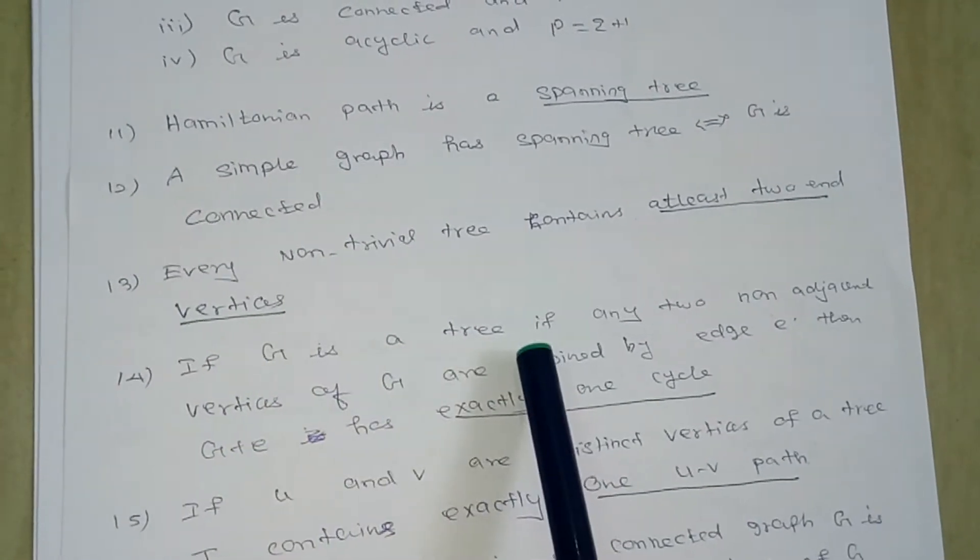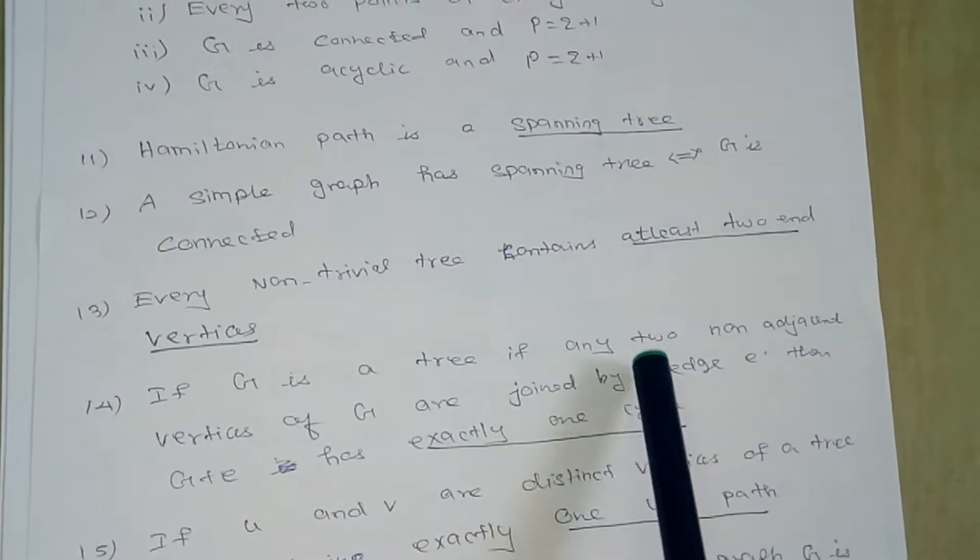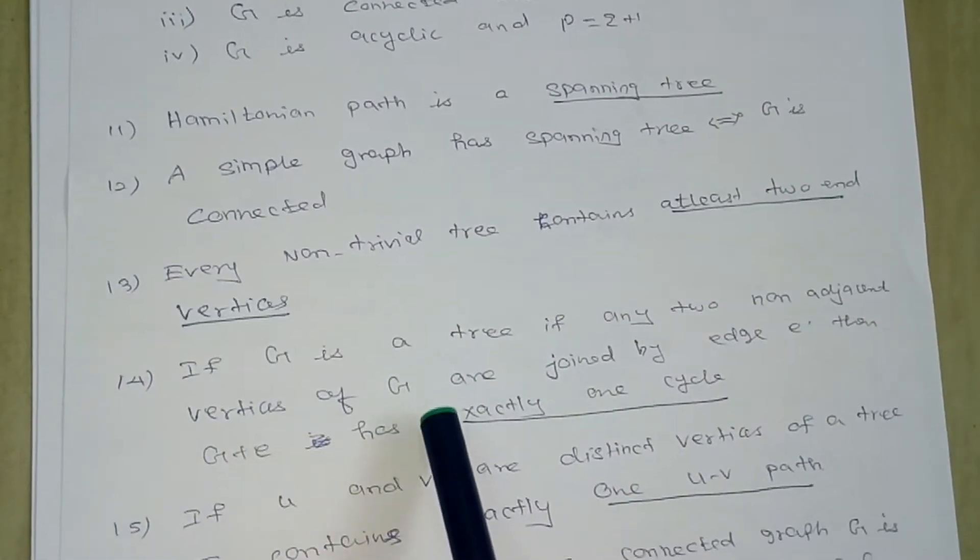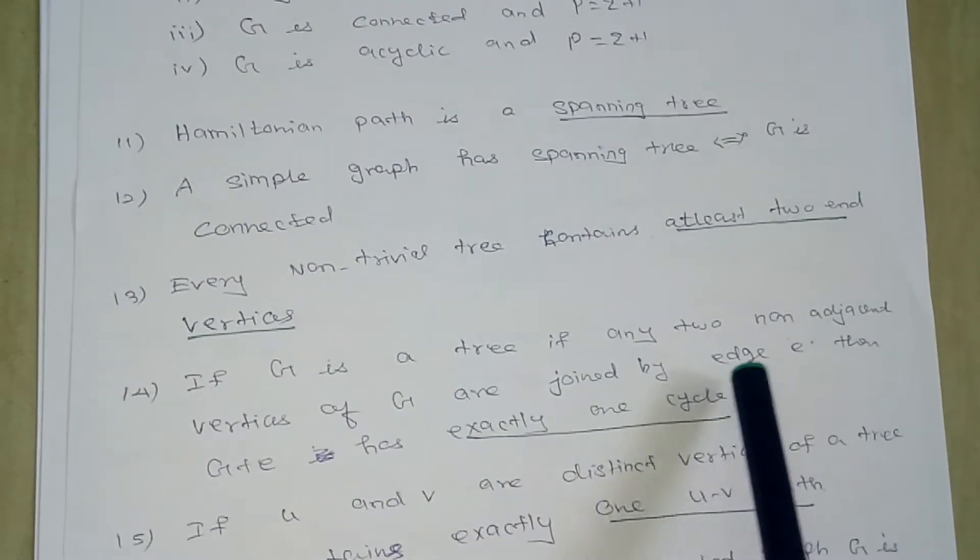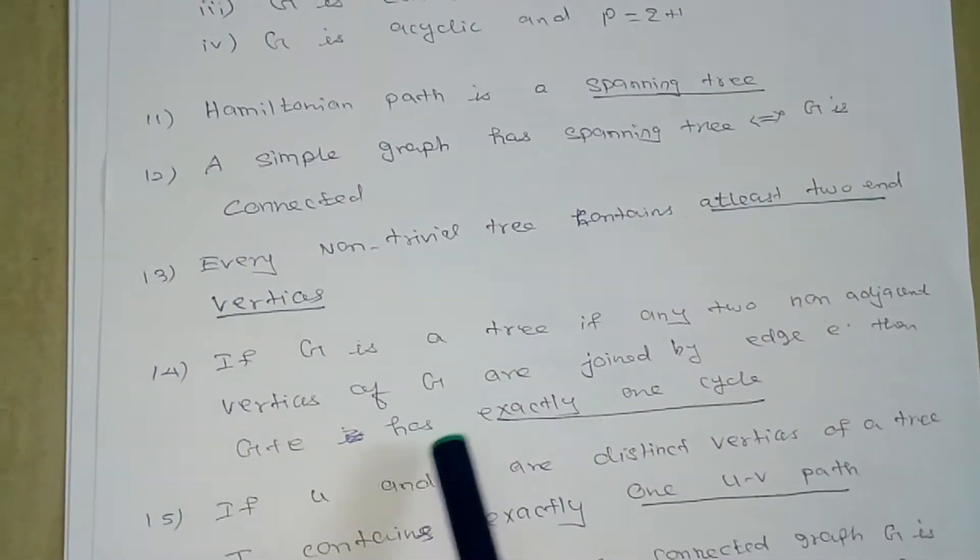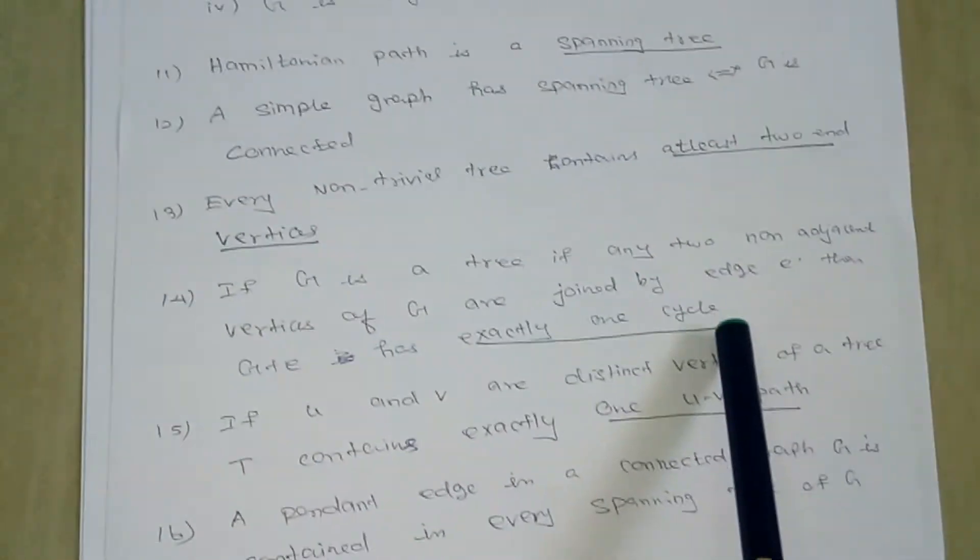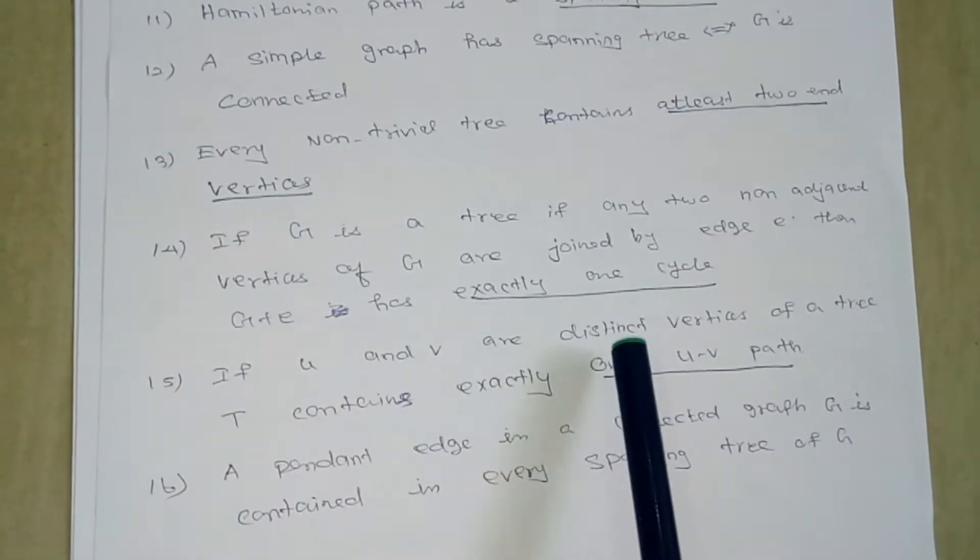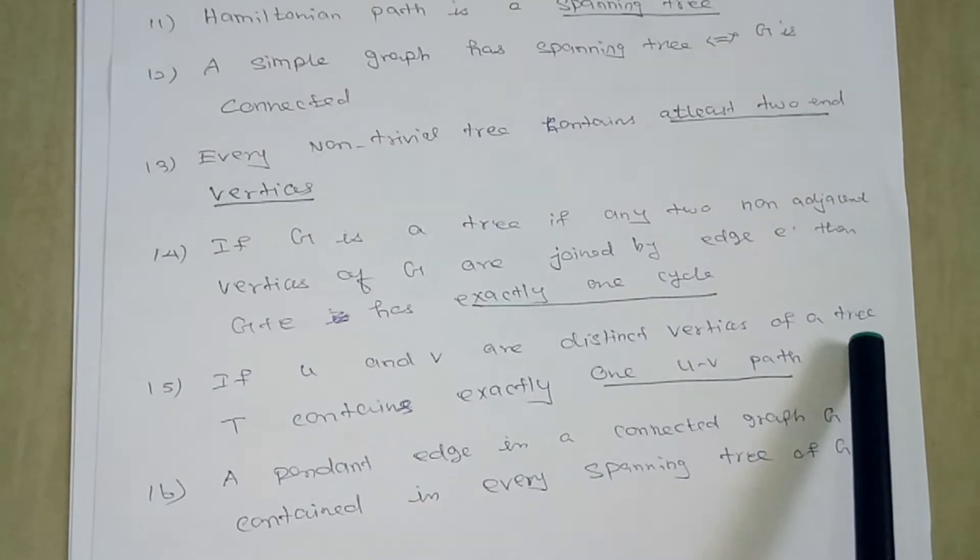If G is a tree, if any two non-adjacent vertices of G are joined by an edge E, then G plus E has exactly one cycle. If U and V are distinct vertices of a tree,